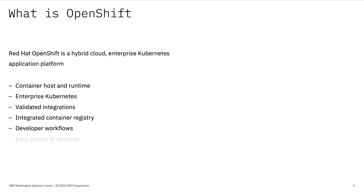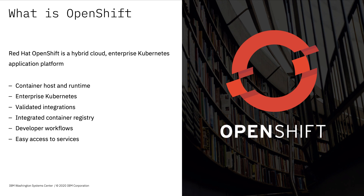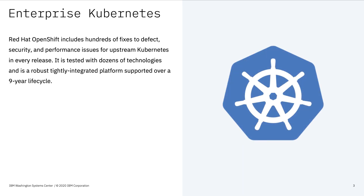We're talking about OpenShift Container Platform, and it is the enterprise hybrid cloud Kubernetes platform that can run on multiple different architectures, including IBM Z. OpenShift is centered around Kubernetes, which Red Hat takes and then includes hundreds of fixes to security, performance, and other issues that exist in upstream Kubernetes. So Red Hat is really trying to work on hardening Kubernetes to make it more enterprise ready.